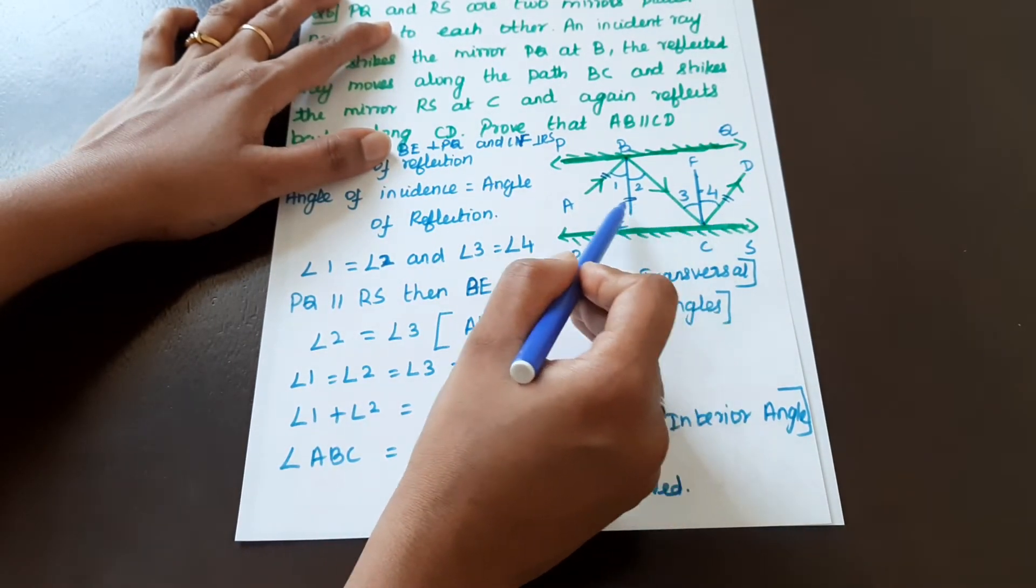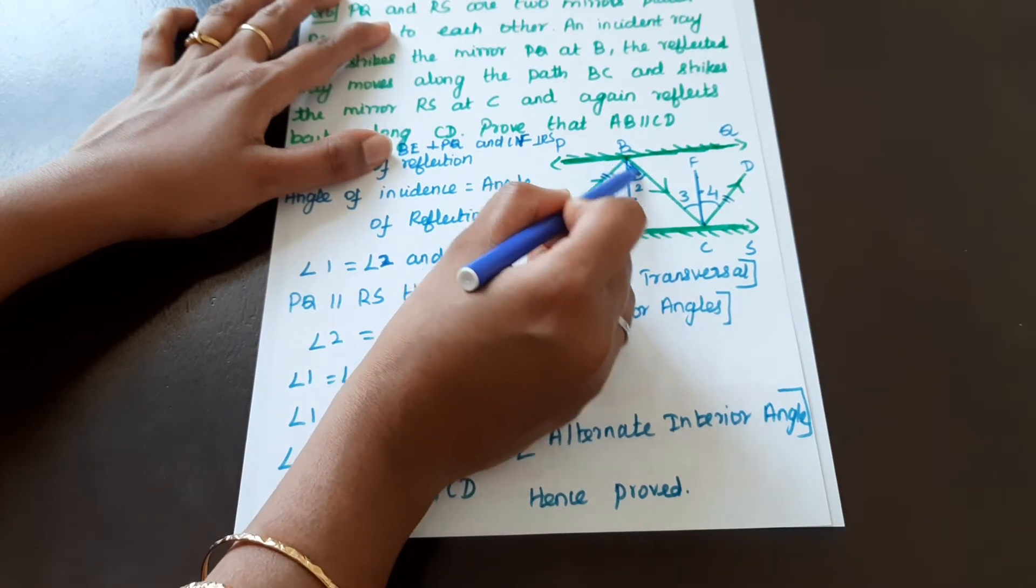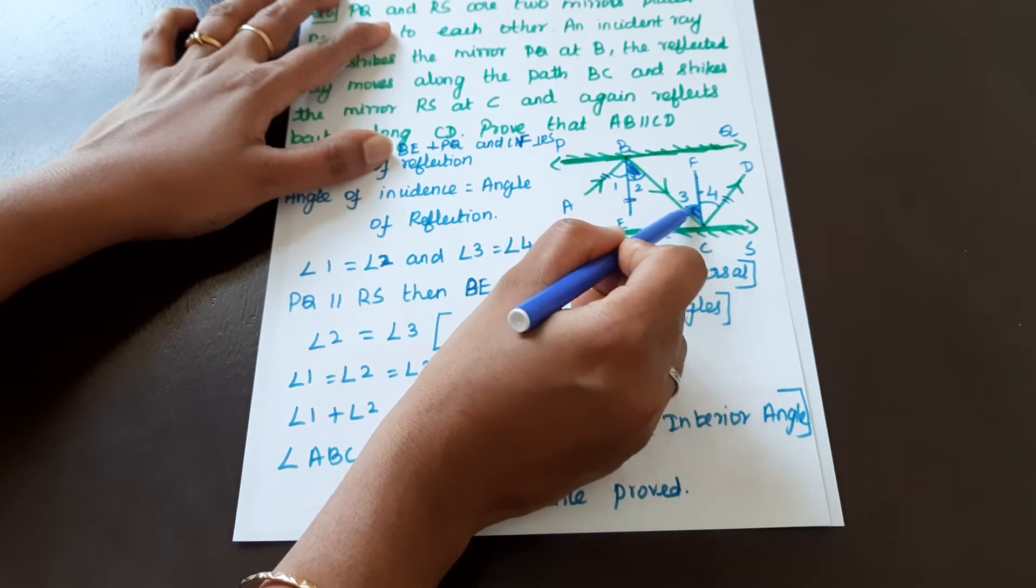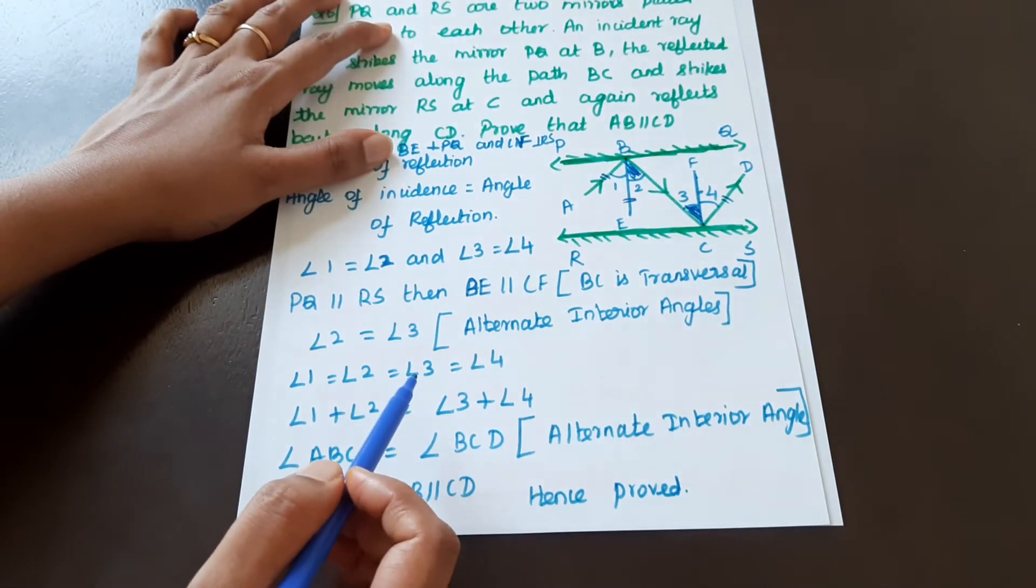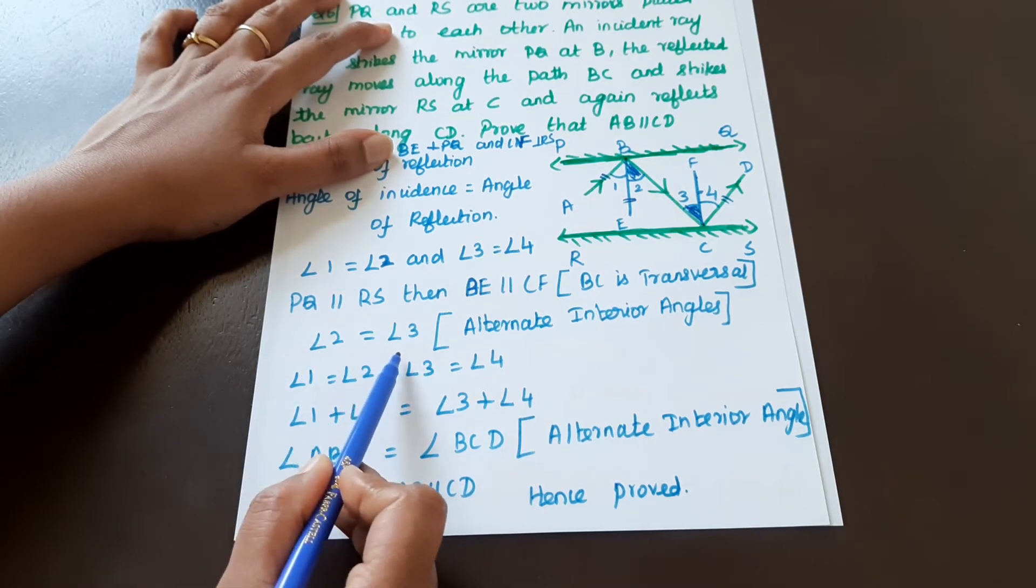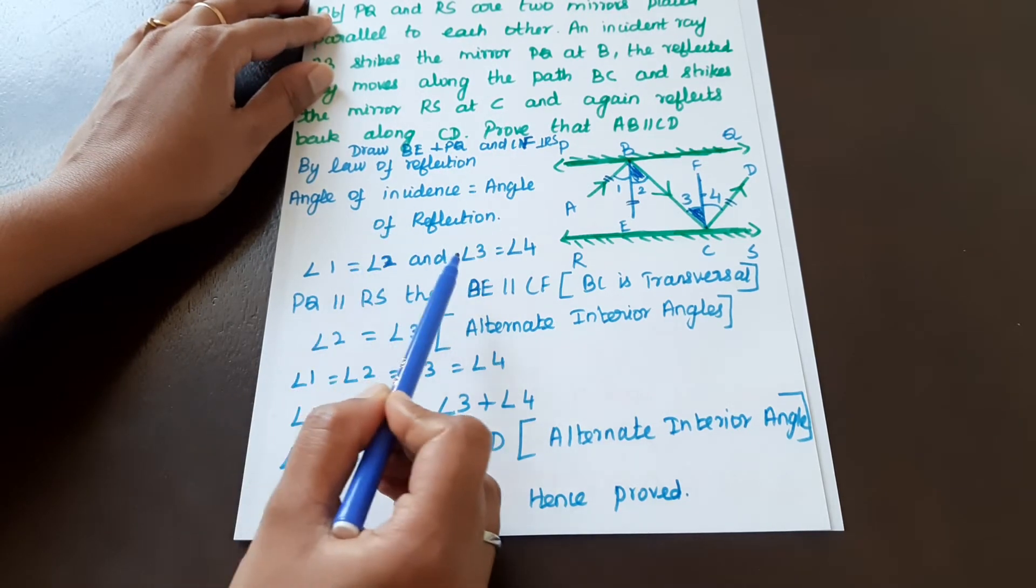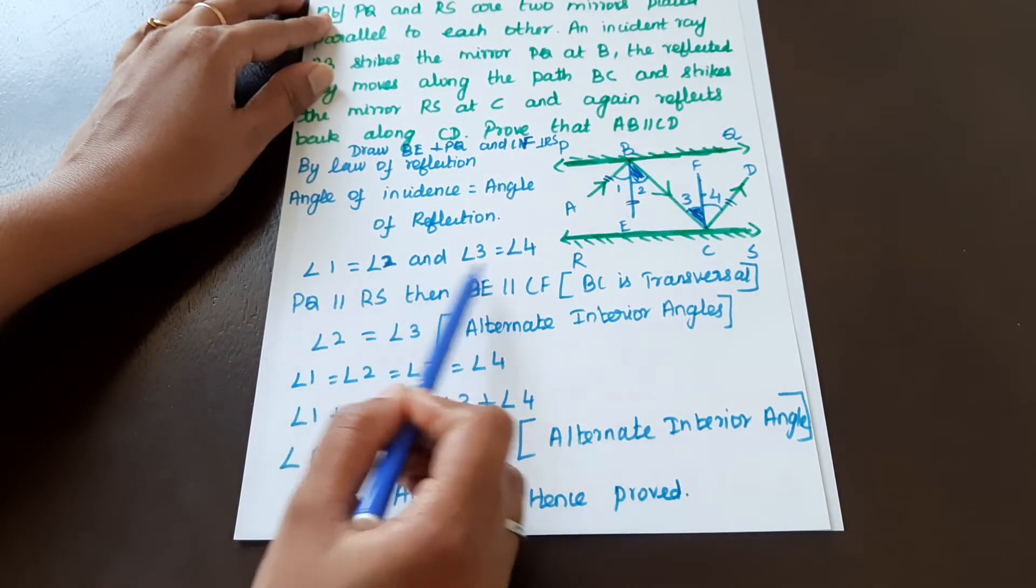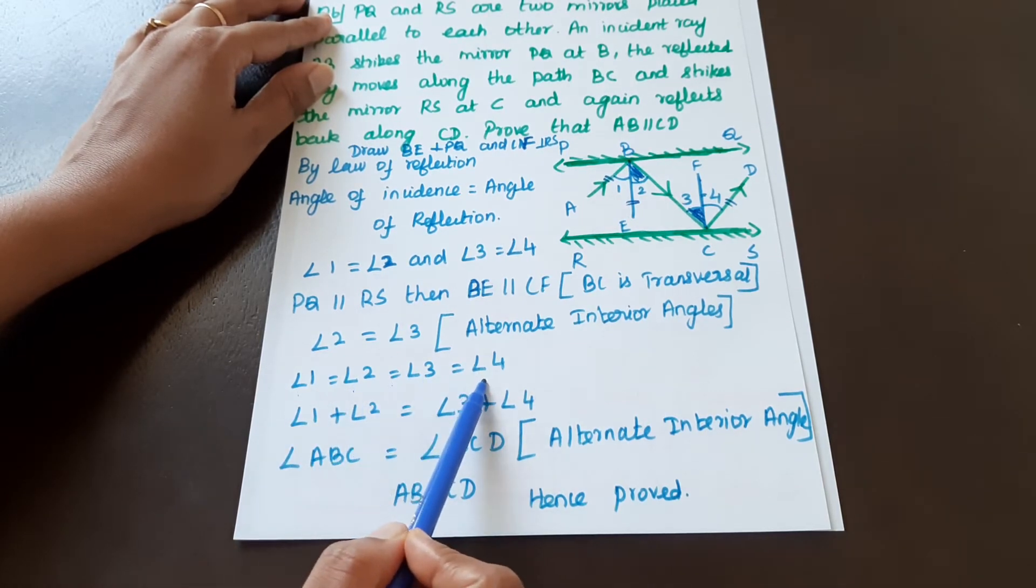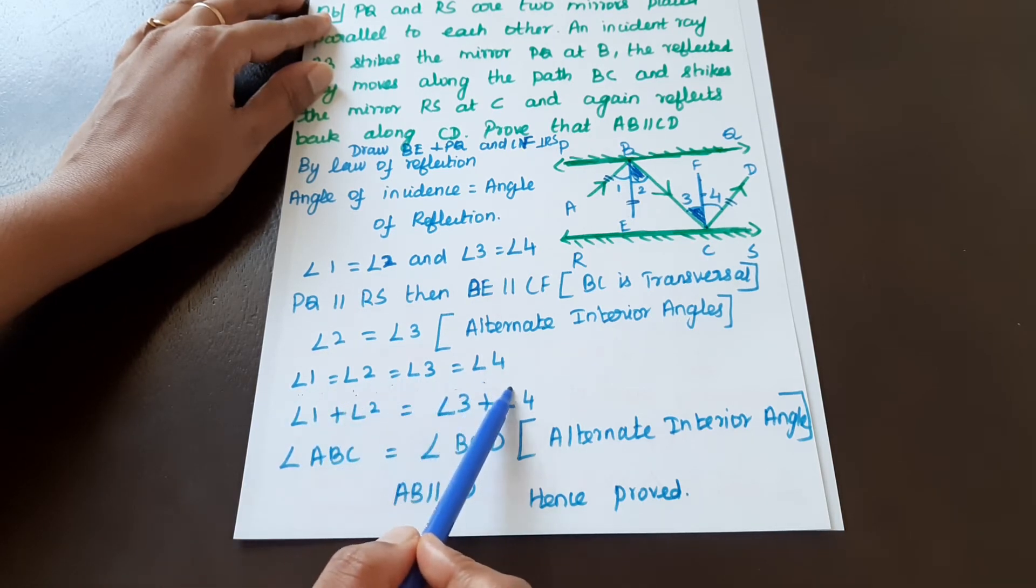Since BE is parallel to CF with BC as transversal, alternate interior angles are equal. Therefore angle 2 equals angle 3. From the law of reflection, angle 1 equals angle 2 and angle 3 equals angle 4. So all four angles are equal: angle 1 equals angle 2 equals angle 3 equals angle 4.